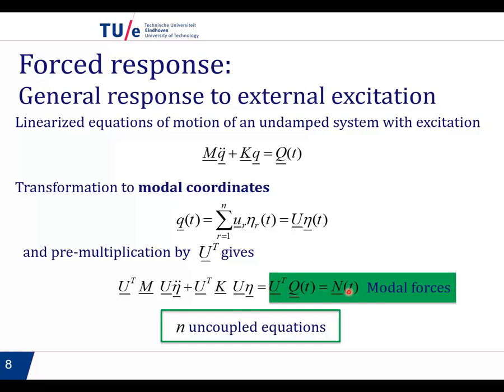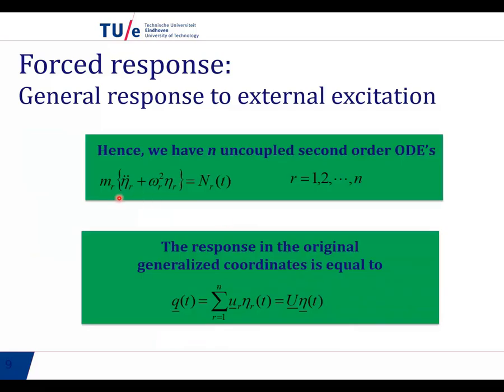And to write it as uncoupled equations, we end up having an expression like this. Modal mass multiplying eta double dot plus omega r squared eta r. And this should be equal to the modal force. So as we said before, we get a set of uncoupled ordinary differential equations, and we have as many equations as degrees of freedom. And if we solve these equations, then we can recover the generalized coordinates from the modal superposition expression.